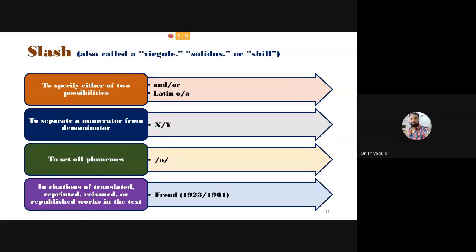Then slash — another punctuation. Where we can use the slash: to specify either of two possibilities, like and/or; Latin symbols like O/A, X/Y; for phonemics notation. Also, if you want to highlight a single author with two different citation years, you can use the slash option. Don't write 'X by Y' in research writing — you have to write X/Y. Instead of writing 'X by Y' in a research report, type X slash Y.